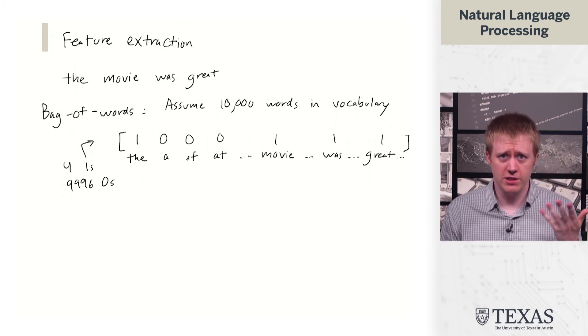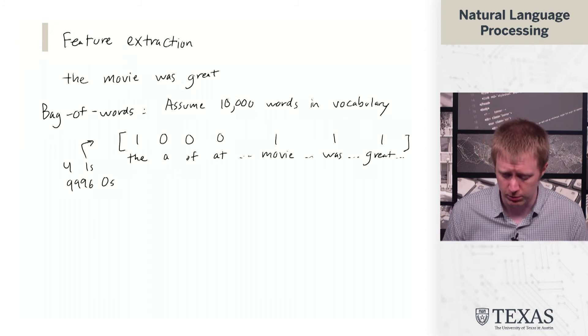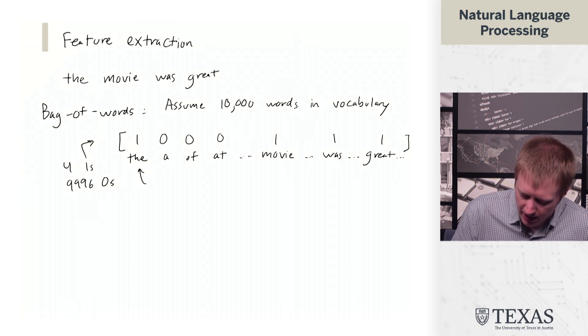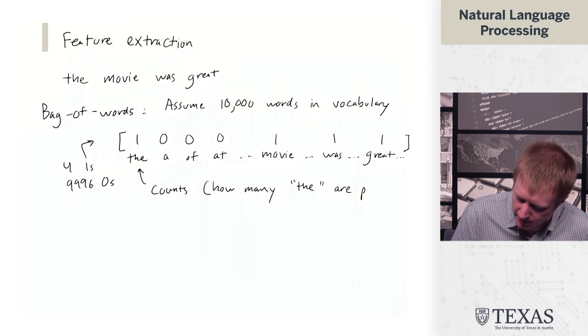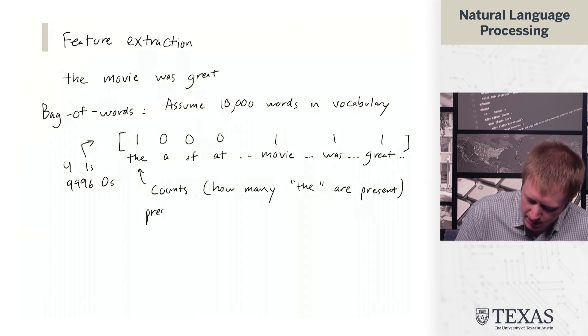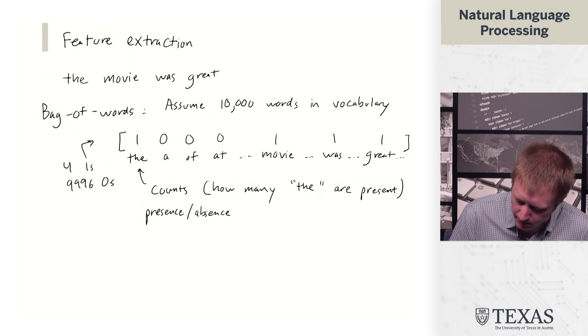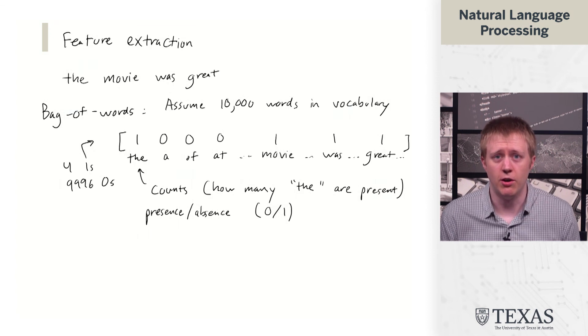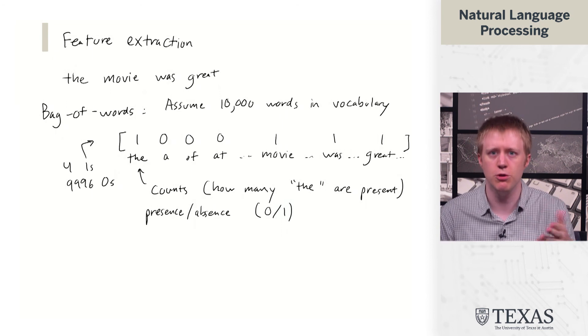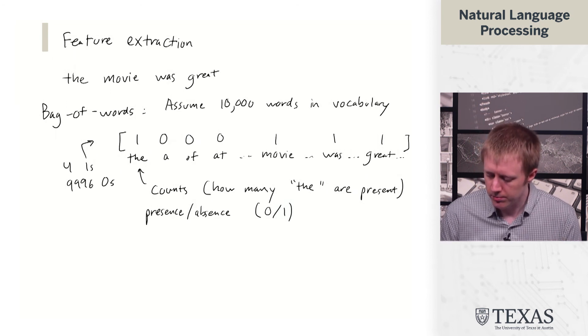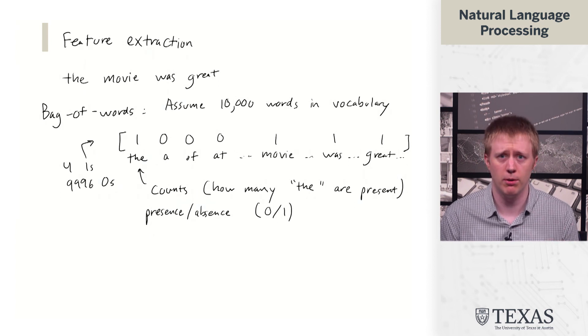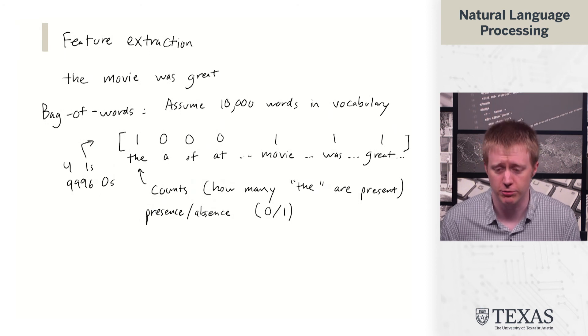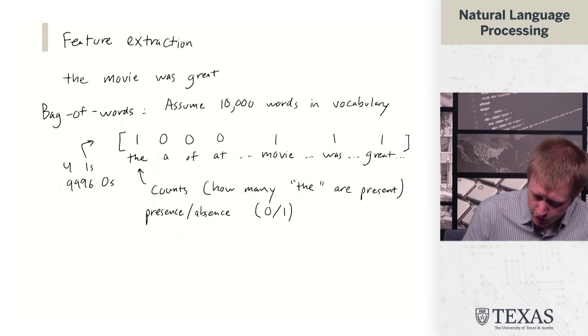So that is going to lead to a vector that looks like this. So we're going to have four ones and 9,996 zeros in this vector. And so there's kind of an additional variable here which doesn't come up in this example. But these values could either be counts, so how many the are present, or it can just be presence absence. So this is going to be either zero or one. And so in that count case, if we had multiple buzz in the sentence, we would get a count of two or a count of three in this feature vector. So this is the representation that we're going to use kind of going forward, and it's a fairly effective representation for sentiment analysis.